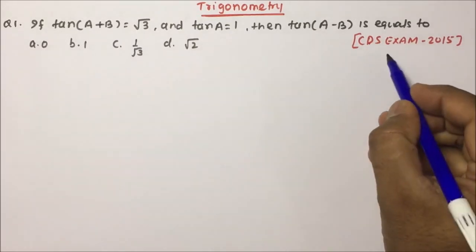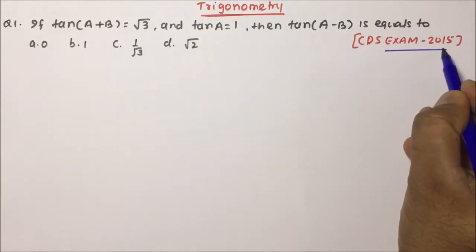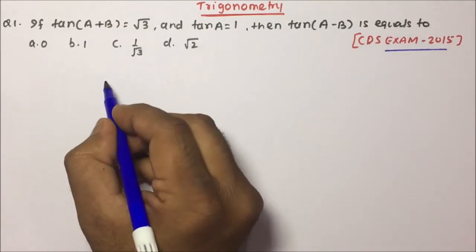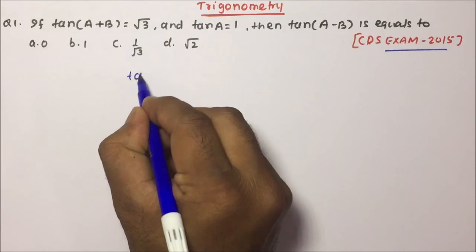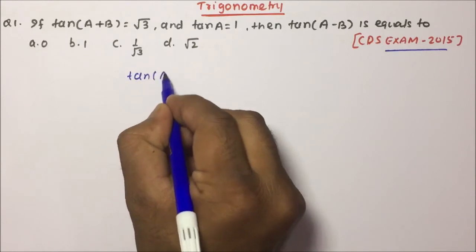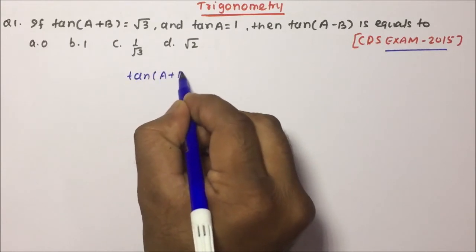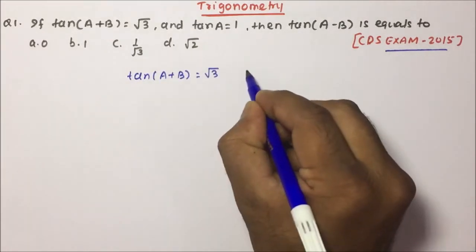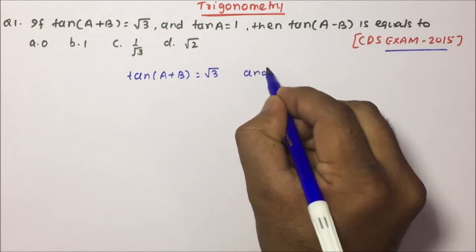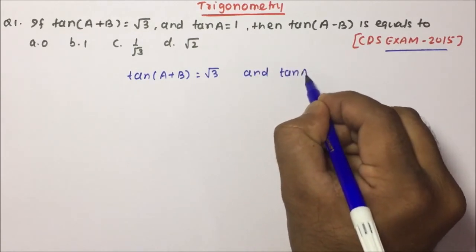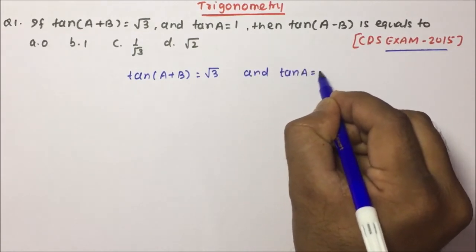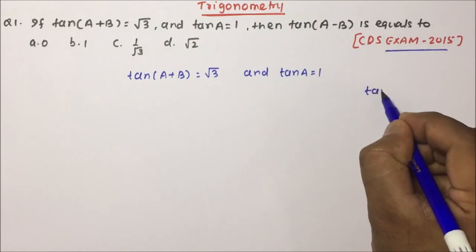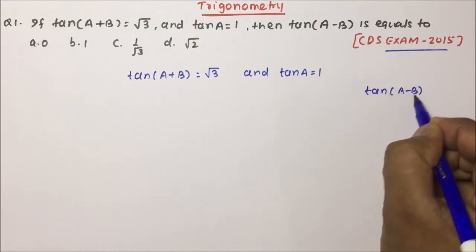This particular question has been asked in the CDS exam 2015. If tan(A+B) is equal to root 3 and tan A is equal to 1, then you have to calculate tan(A−B).